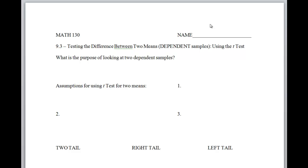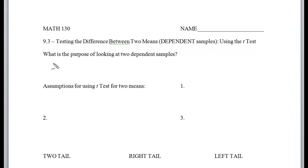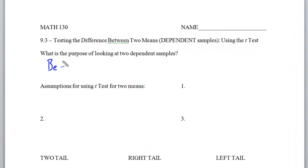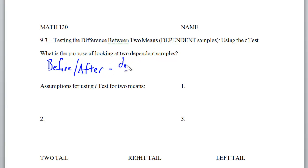The main purpose of doing this is to do before and after — to see what happens if you have had an effect on a group, and see if it's statistically significant. The idea of dependence is really to ask: does one affect the other?